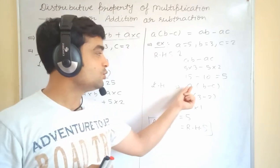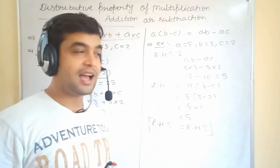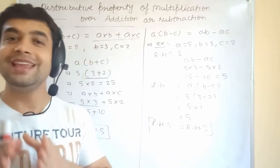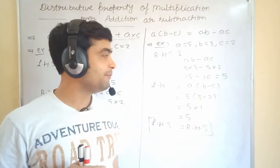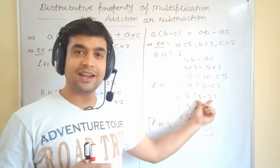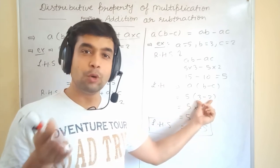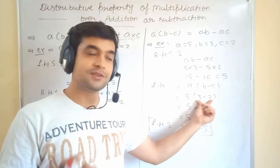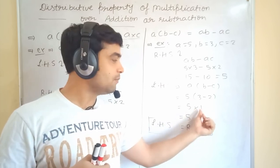Let's see LHS. So, A into B minus C. Again, we are going to put the value of A, B, C. In the place of A, 5. In the place of B, 3. In the place of C, 2. So, first we will solve the bracket. We know by the BODMAS. BODMAS means bracket. We have to solve first. So, 3 minus 2 will come 1.